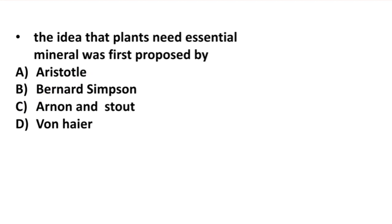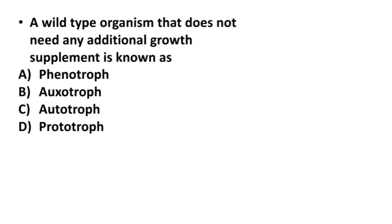Now next question, a wild type organism that does not need any additional growth supplement is known as phenotroph, auxotroph, autotroph, or prototroph? Its correct answer is option D, prototroph. Thank you.